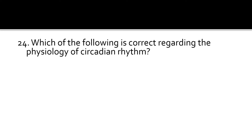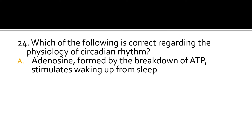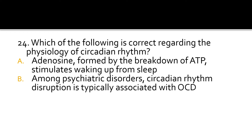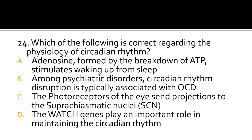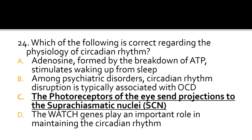Question 24. Which of the following is correct regarding the physiology of circadian rhythm? Adenosine, formed by the breakdown of ATP, stimulates waking up from sleep. Among psychiatric disorders, circadian rhythm disruption is typically associated with OCD. The photoreceptors of the eye send projections to the suprachiasmatic nuclei of the hypothalamus. The watch genes play an important role in maintaining the circadian rhythm. The correct answer is C: the photoreceptors of the eye send projections to the suprachiasmatic nuclei.